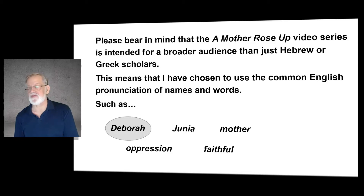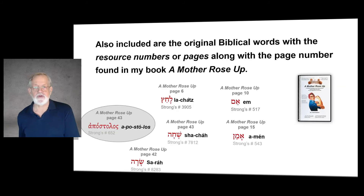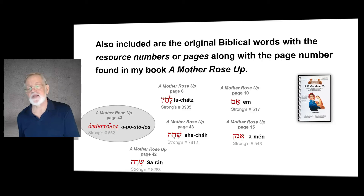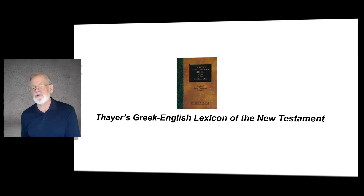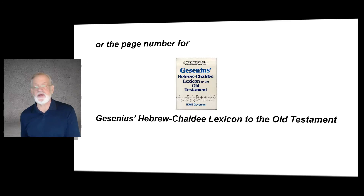This means that I have chosen to use the common English pronunciation of names and words such as Deborah, Junia, Mother, Prussian. Also included are the original biblical words with the resource numbers or pages, along with the page number found in my book, A Mother Rose Up — for example, A Mother Rose Up page 43, Apostolos, Strong's number 652. The resource number is for Strong's Exhaustive Concordance of the Bible, Thayer's Greek English Lexicon of the New Testament, or the page number for Gesenius Hebrew Chaldee Lexicon to the Old Testament.